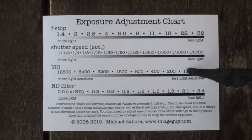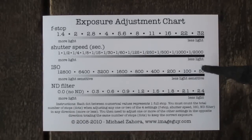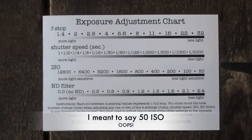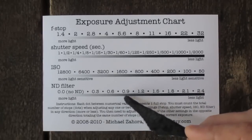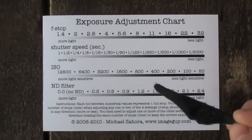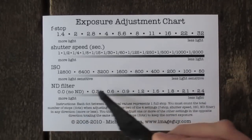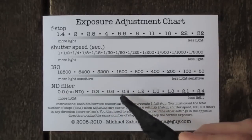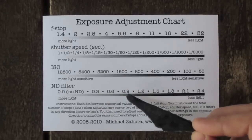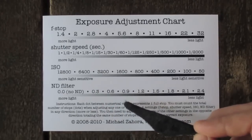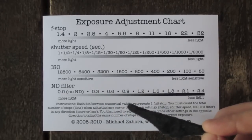Since we're already at 100 ISO, we don't have much room to move there, and some cameras don't go down to a 50th of a second. So what we can do is add a 0.9 neutral density filter — that's one, two, three dots, or three stops — and that'll give you the correct exposure.